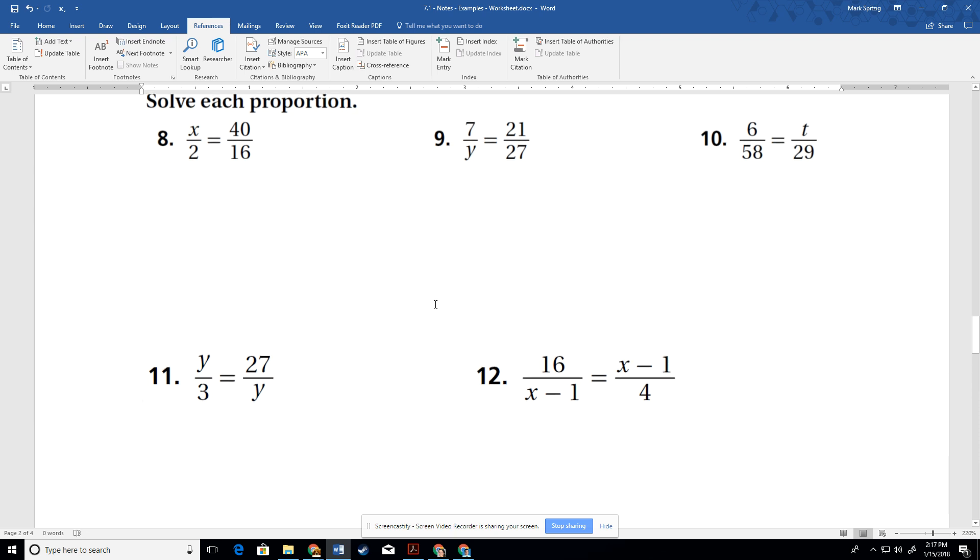All right. So here we go. Solving some proportions. No big deal here. We're going to cross multiply and get 2 times 40 is 80. 16 times x. I guess I should just write it out the first couple times. 2 times 40 equals x times 16. So 80 divided by 16. x equals 5. And we solved. All right.